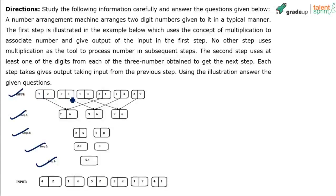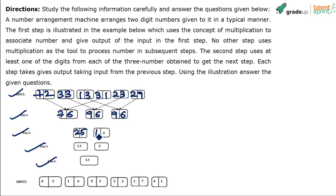The input is 72, 33, 13, 31, 23, 29. I'll rewrite it with a bigger font size. These numbers then become 76, 96, 96. We have six two-digit numbers — 72, 33, 13, 31, 23, and 29 — and in step one they have been reduced to just three numbers. So six numbers have been reduced to three.